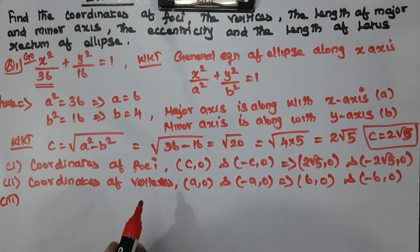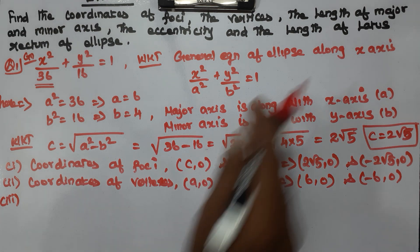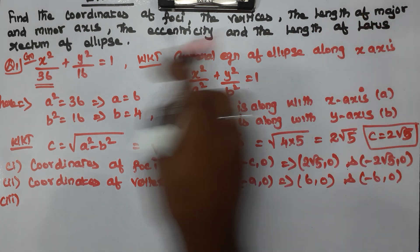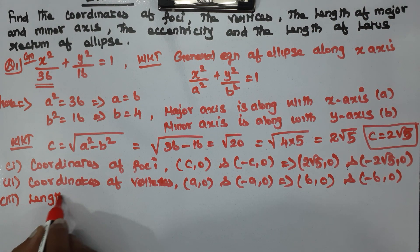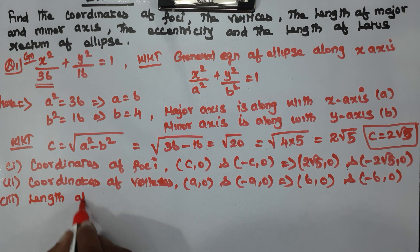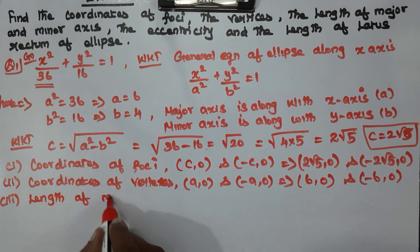Number 3: length of major axis. The length of major axis is 2a.